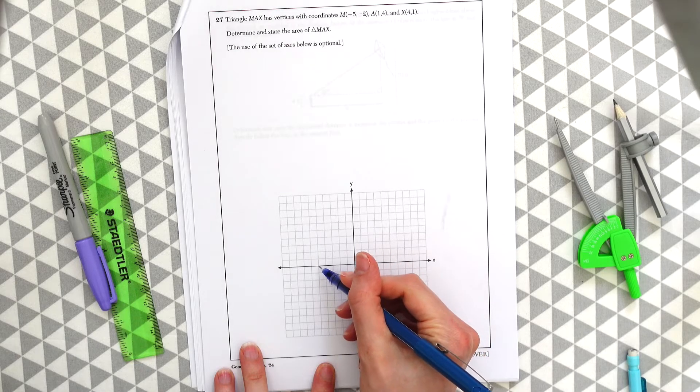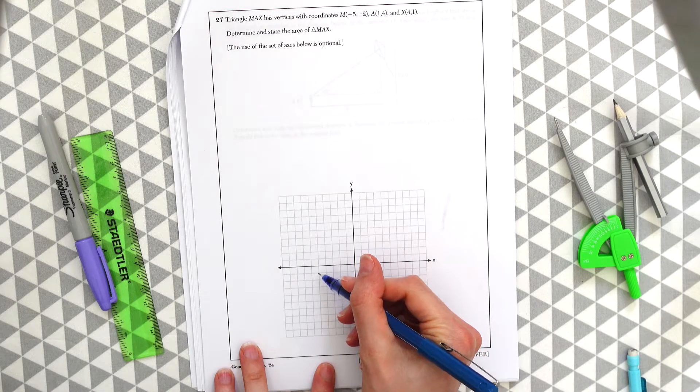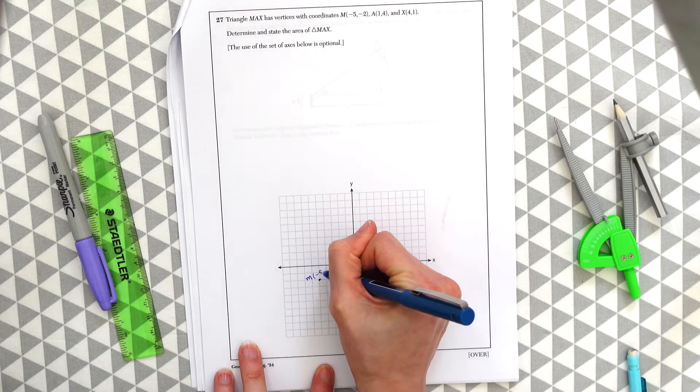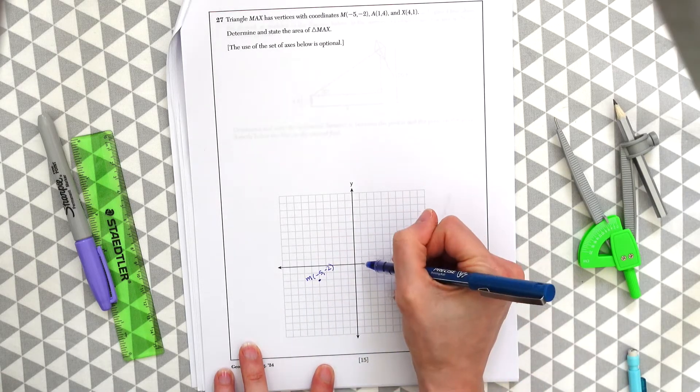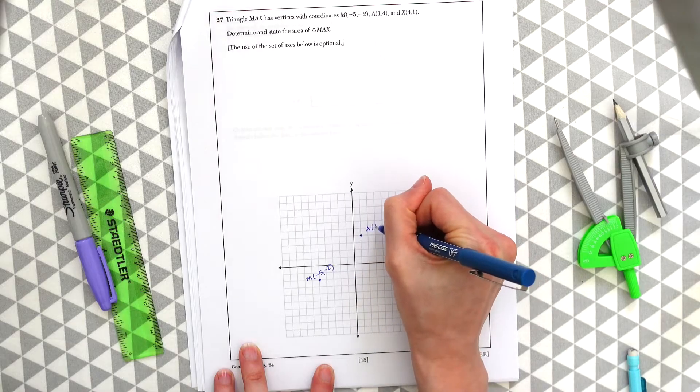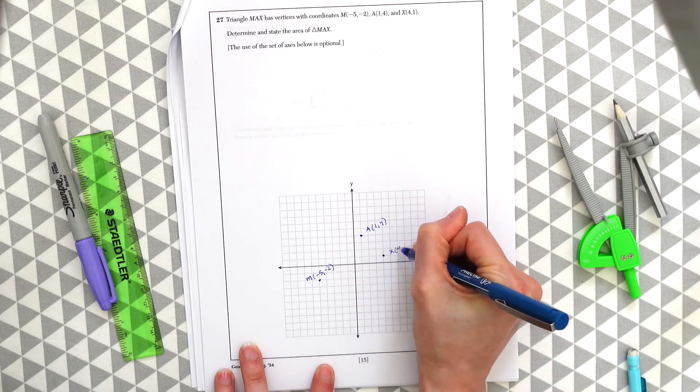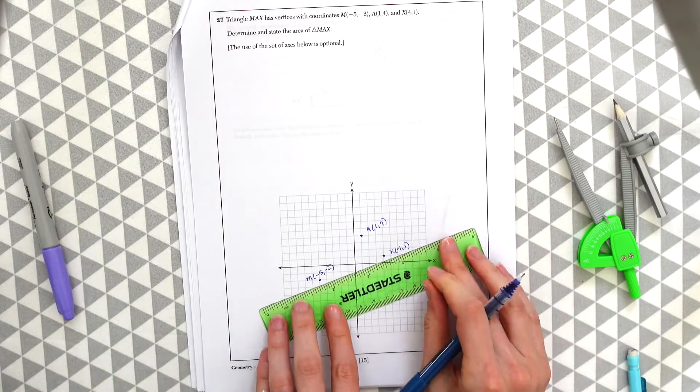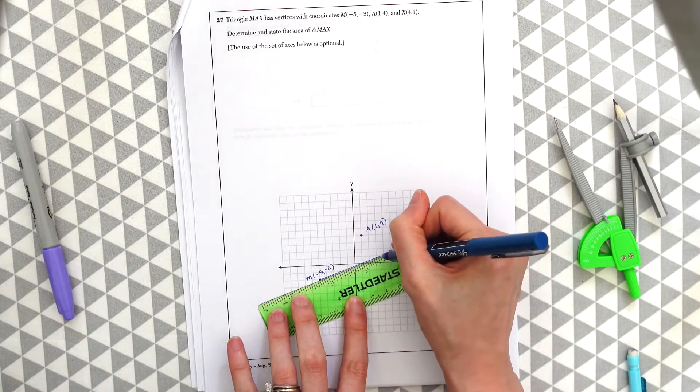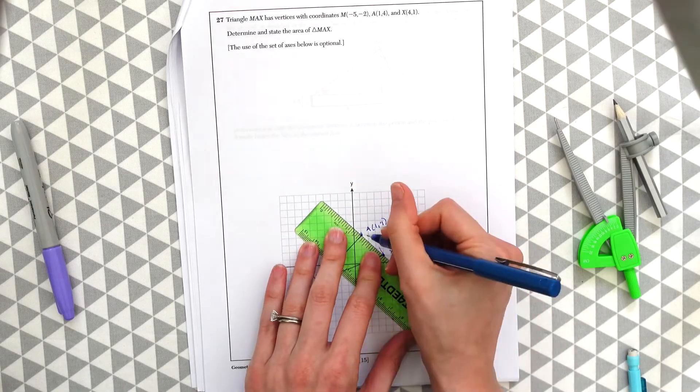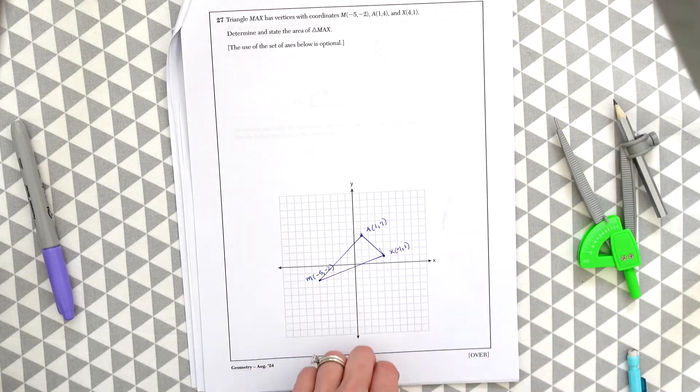So let's see where negative 5, 2 is. And there's our triangle.